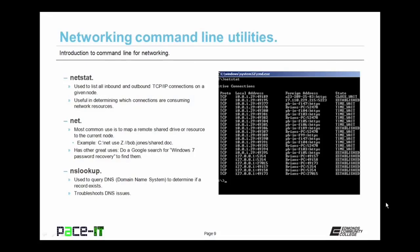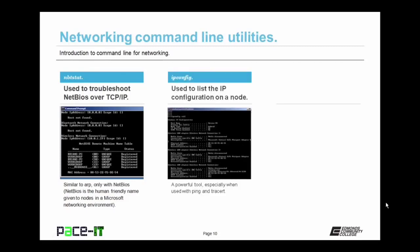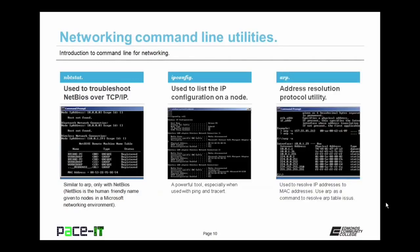Nbtstat is used to troubleshoot NetBIOS over TCP/IP — very similar in function to ARP, only with NetBIOS. NetBIOS is the human-friendly name given to nodes. The ipconfig command is very useful when troubleshooting networking issues — it lists the IP configuration for a given node. Use it in conjunction with ping and tracert to determine if there is an IP address conflict. ARP — Address Resolution Protocol — is used to resolve IP addresses to MAC addresses, which is how a switch knows where to deliver a packet. Use ARP at the command line to resolve ARP table problems.